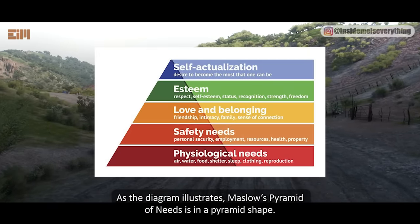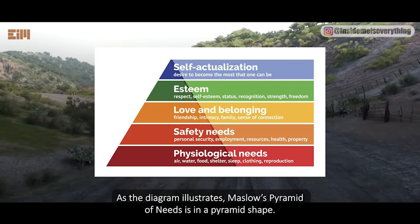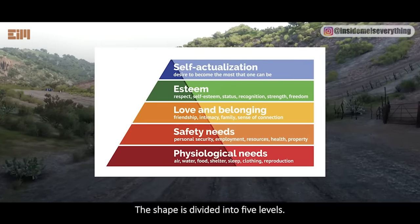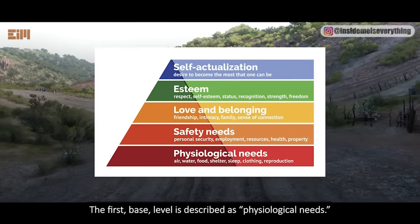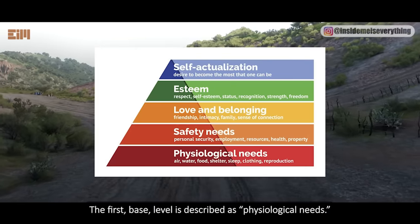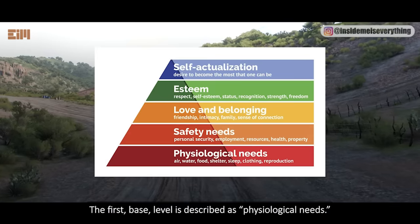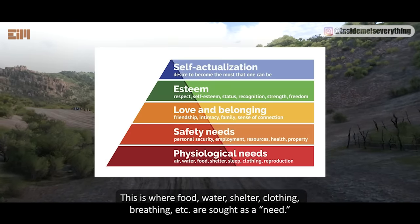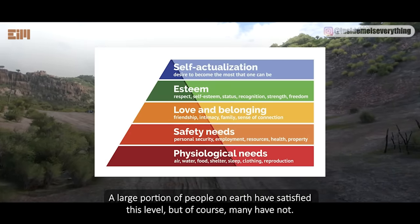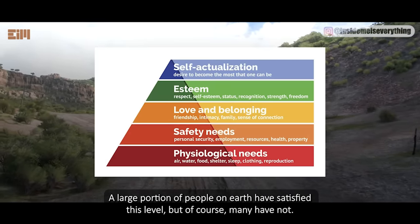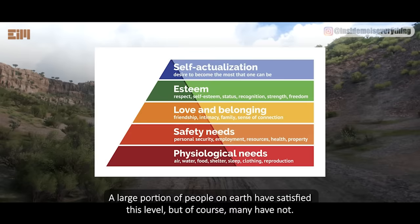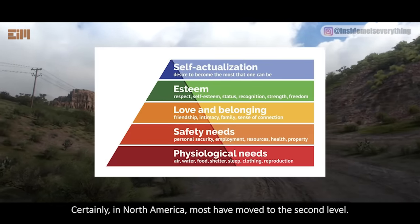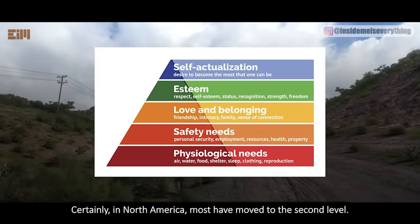As the diagram illustrates, Maslow's pyramid of needs is in a pyramid shape, divided into five levels. The first, base level is described as physiological needs — this is where food, water, shelter, clothing, breathing, etc., are sought as a need. A large portion of people on earth have satisfied this level, but of course many have not. Certainly in North America, most have moved to the second level.